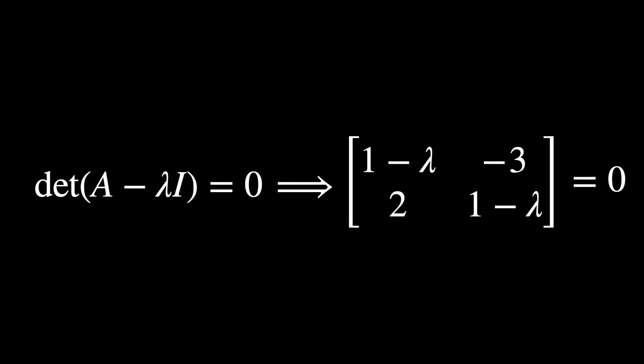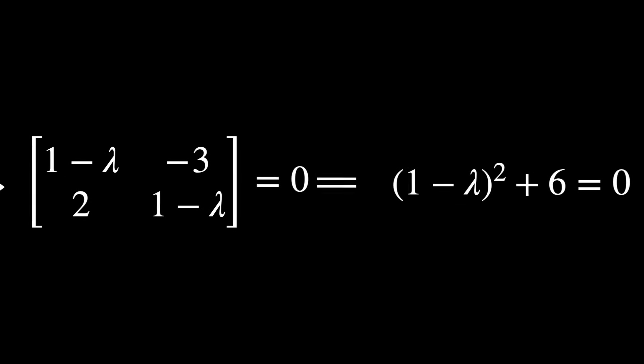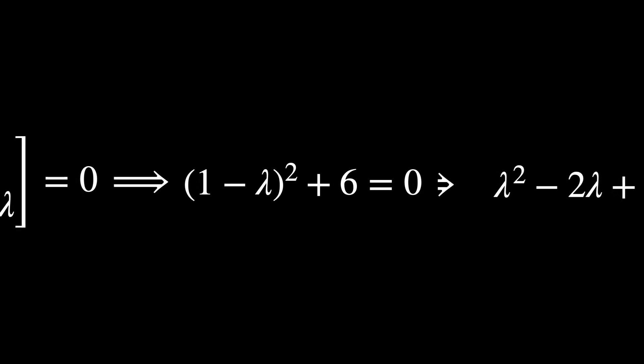Once again, we use the characteristic equation to find the eigenvalues. Calculating the determinant here, we find a quadratic equation, which is represented by a parabola.